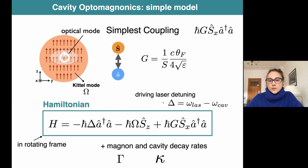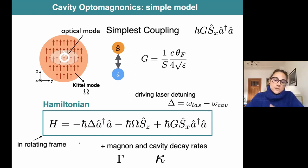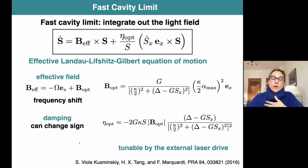We add this coupling term to the free Hamiltonians of the photon in the rotating frame - here is the detuning, which is the driving laser minus the cavity frequency - plus the free precession of the spin with frequency omega and the coupling term we have already seen. We also add magnon and cavity decay rates. We can now study the dynamics of the system by writing equations of motion and solving them in the fast cavity limit, where the photons don't spend too much time in the cavity. We treat just the classical dynamics, considering expectation values on coherent states.